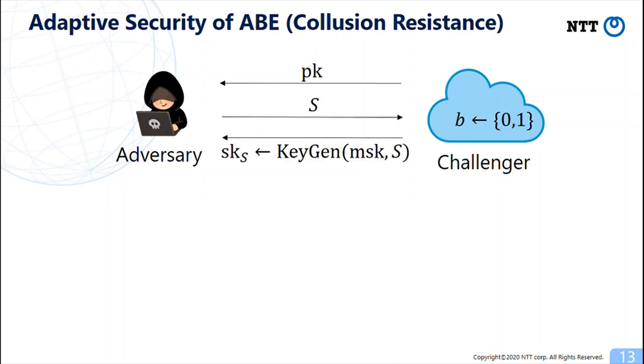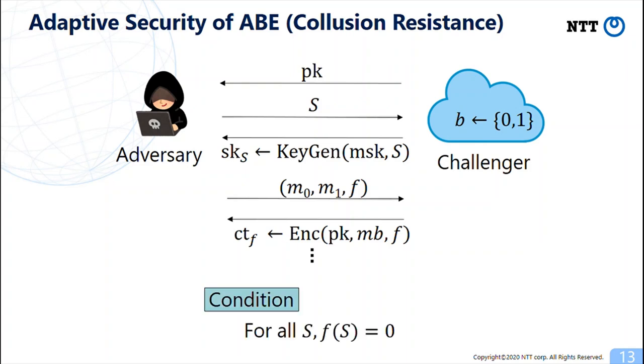Then, adversary can make any number of secret key queries and one challenge ciphertext query adaptively. Finally, adversary tries to guess the bit B. And as a game condition, adversary is prohibited to get a secret key that can decrypt the challenge ciphertext.